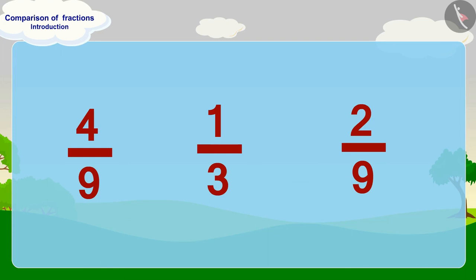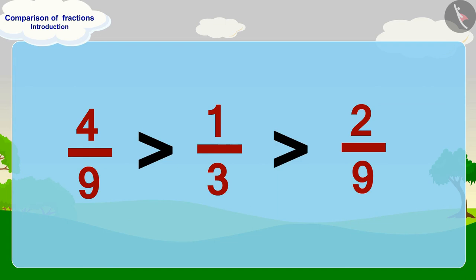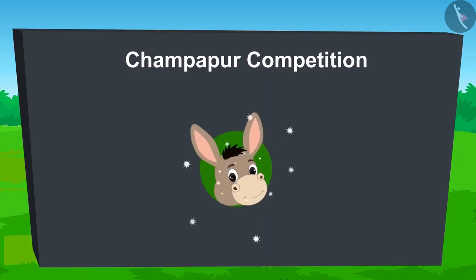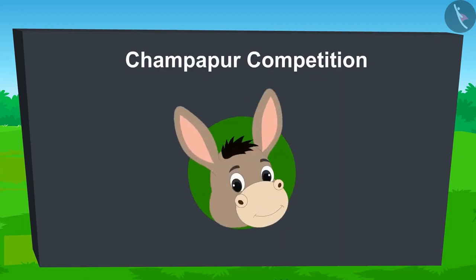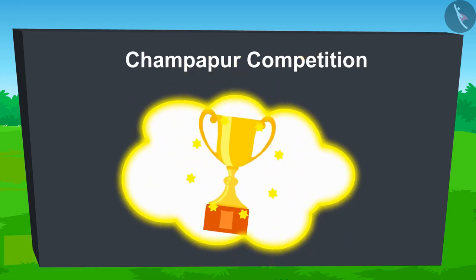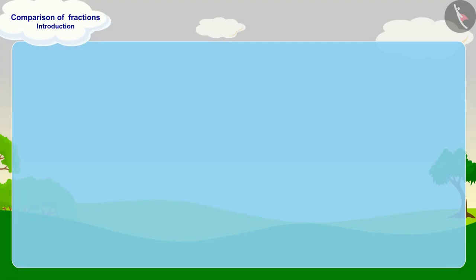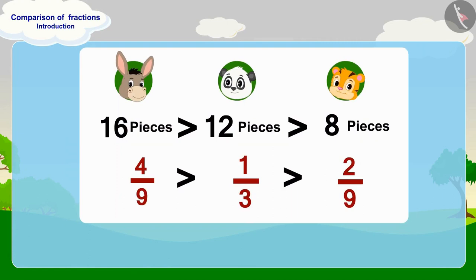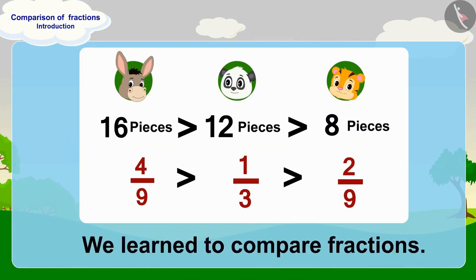We can also see it this way: the fraction four-ninth is larger than one-third. We can also write the fractions for the number of pieces written on by Bhola and Golu in this way. After all, Bhola won the competition by writing his name on the most pieces of paper. Children, in this lesson we learned to compare fractions.